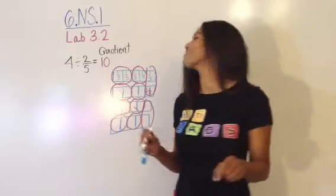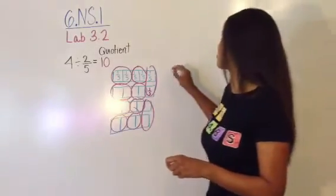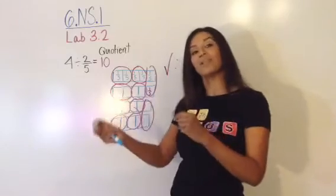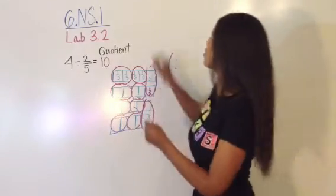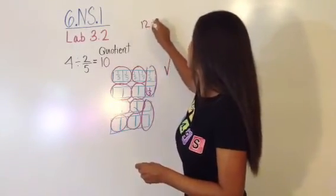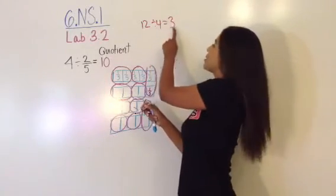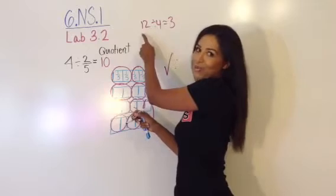But if you forgot, here's the method. You were to use multiplication. Remember, division and multiplication are inverses. So just as in 12 divided by 4 equals 3, you could check that by multiplying 3 times 4 and you should equal 12, right?